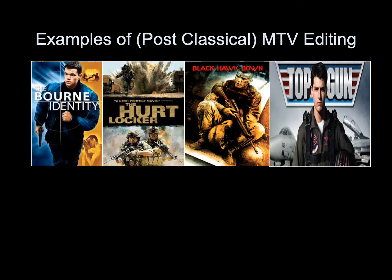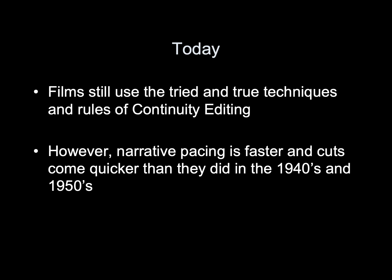Examples of post-classical or MTV editing include The Bourne Identity, The Hurt Locker, Black Hawk Down, and Top Gun. Films today still use tried-and-true editing techniques and the rules of continuity editing; however, narrative pace is faster and cuts come quicker than they did in the 1940s and 1950s.